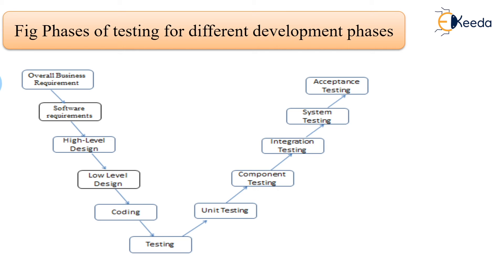When you look at the testing arrows in the V-model, they show that one after the other, you start with unit testing and end with acceptance testing.